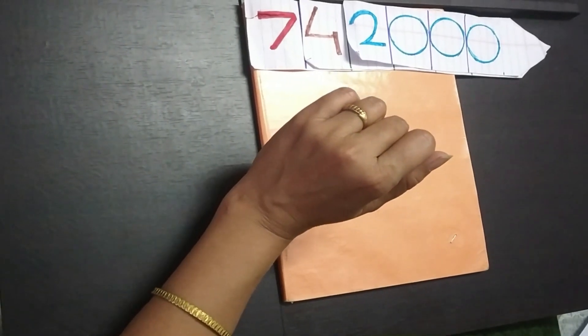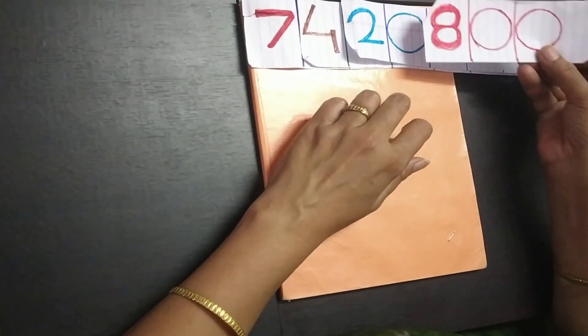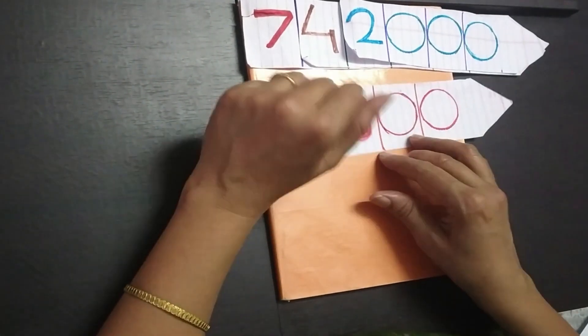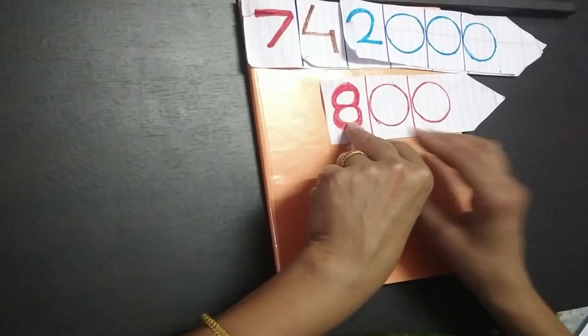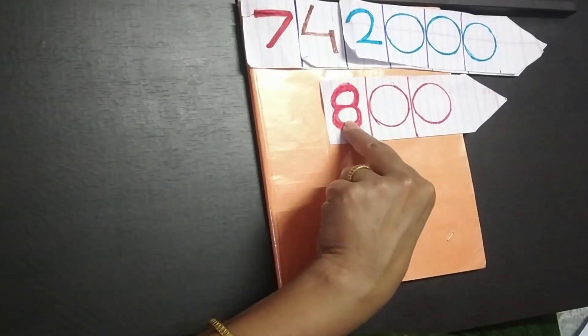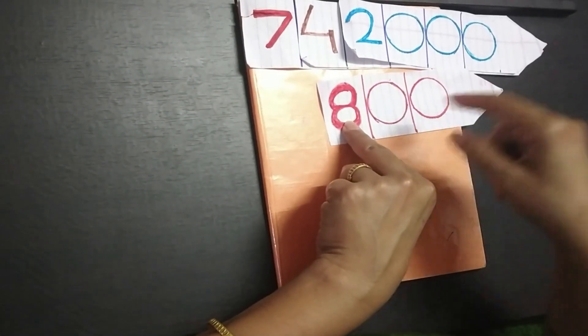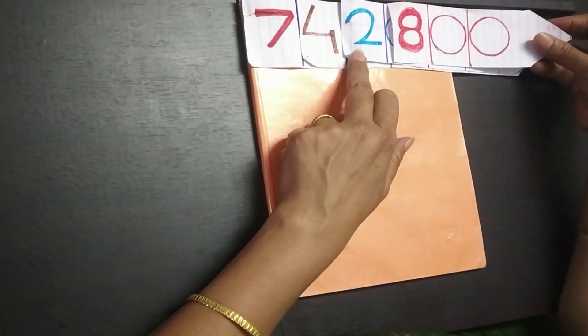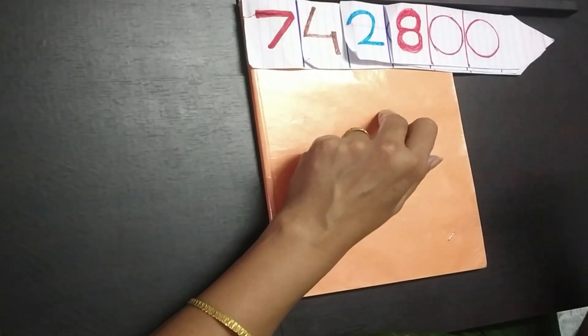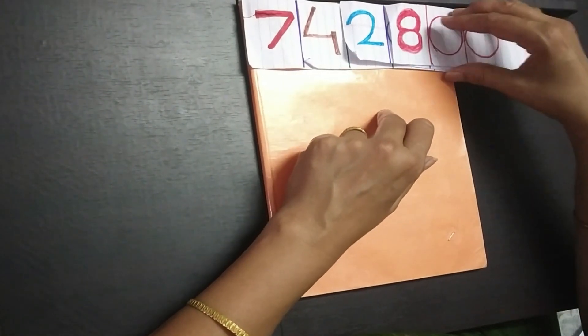Then one more card we are going to consider. What is the number shown here on this card? The number shown here is 800. Correct.